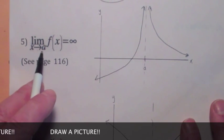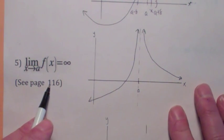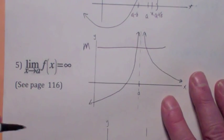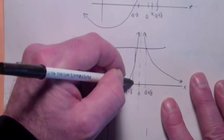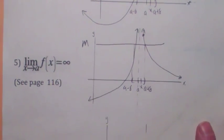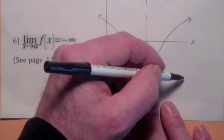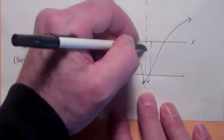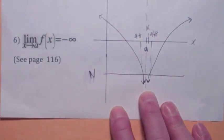The limit as x goes to a of f(x) equals infinity means the y values have to be arbitrarily large. For any M, as x gets close to a, you have to find a delta interval around a so that if x is in that interval — except possibly a itself — f(x) will be above M. The limit as x goes to a of f(x) equals negative infinity means the function values get arbitrarily low. For any N, you have to find a delta interval — a plus delta, a minus delta — so that if x is in that delta interval around a, the f(x) is below N.